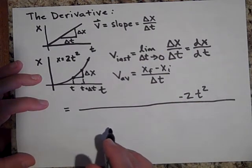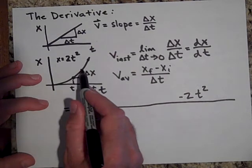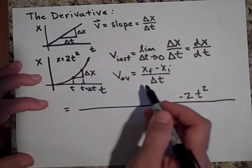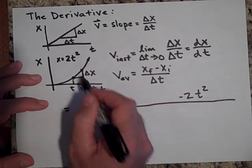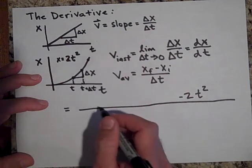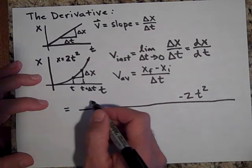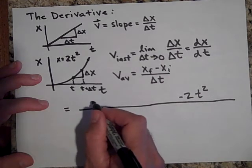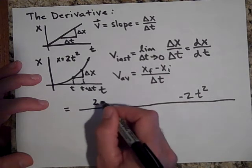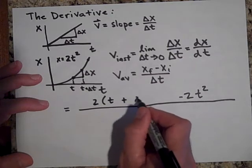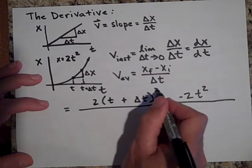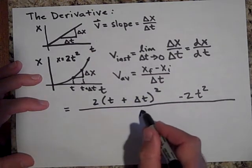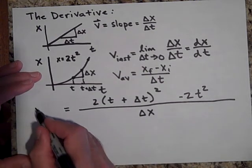Okay, what is x final? x final is right here. And I'm going to put in t plus delta t in for t. And so when I do that, I get the following. It's going to be 2 times t plus delta t squared. And that's all going to be over delta x. That's v average.